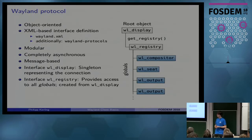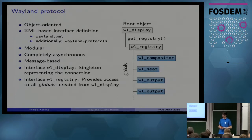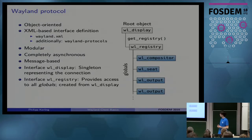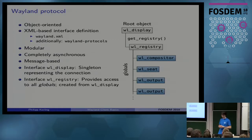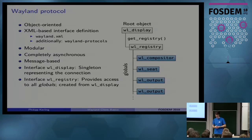Some specific interfaces you'll have to use in Wayland: first, wl_display, which is the singleton interface representing the connection to a Wayland server — you get that just when connecting to a Wayland socket. The other one is wl_registry, which you derive from wl_display, and that provides access to all other global objects and interfaces. It is the entry point for everything. You get the wl_display, then call get_registry on that, and get access to all the globals underneath.